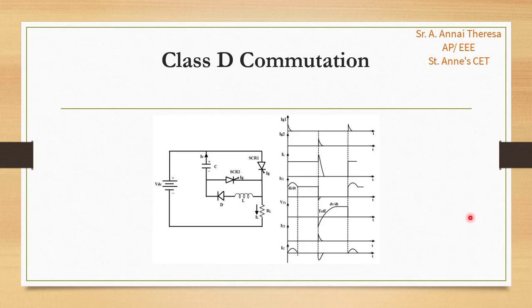The next one is Class D commutation. Here C or LC is switched by an auxiliary SCR. The difference between Class C and Class D is the load current: in Class C, both SCRs may act as main SCRs and carry the load current, whereas in Class D, only one SCR carries the load current while the other acts as an auxiliary thyristor.